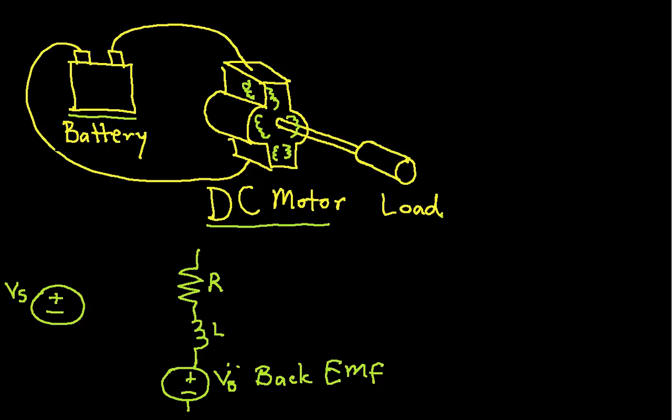This is back EMF. EMF stands for electromotive force. And the idea is that as I spin up the load, so it starts to rotate in this direction, I have the coils on the rotor rotating in a magnetic field. And that turns out to actually be a generator. And the idea is, as the velocity, the angular velocity of this load increases, then the voltage generated by the back EMF also increases.